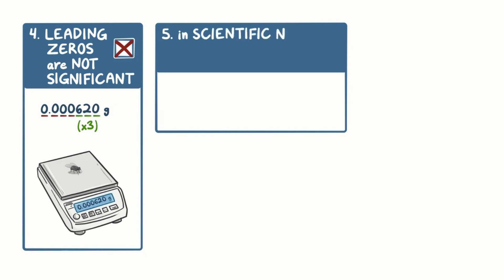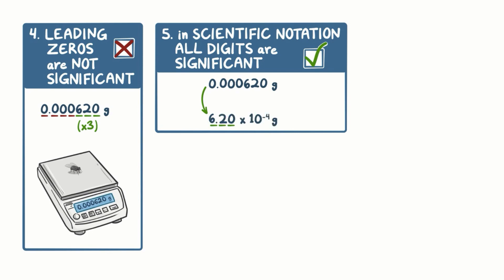Rule 5 says that when scientific notation is used, all digits are significant. So if we put the previous measurement into scientific notation, then 0.000620 becomes 6.20 times 10 to the negative 4th grams. Here all of the digits are considered significant, so there are three significant figures.